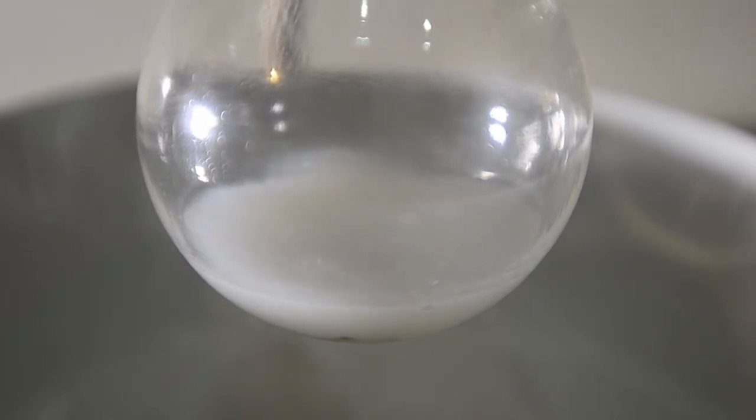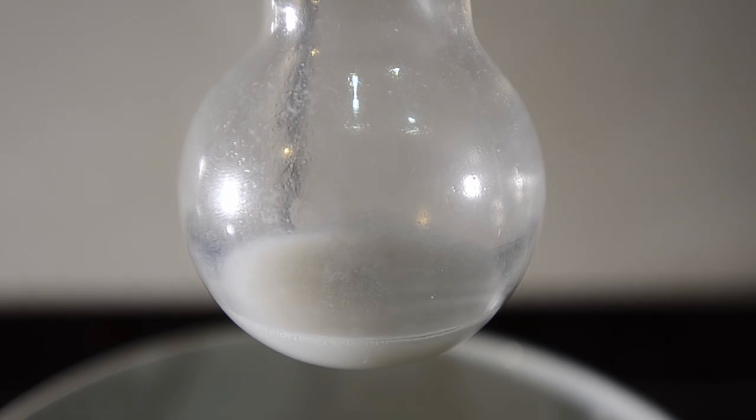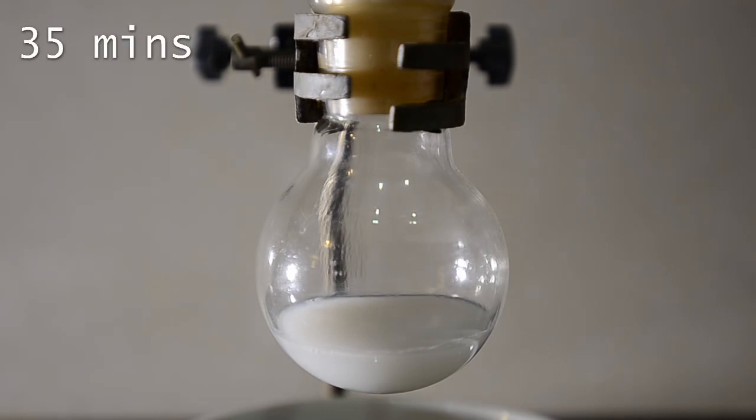If we were going to use our Grignard reagent for another reaction we'd probably want to put a condenser on at this point and stop the ether from evaporating off. The total reaction time took about 45 minutes before the bubbling died right down and we were left with a dirty gray product looking like dishwater. So this works but it takes rather a long time.